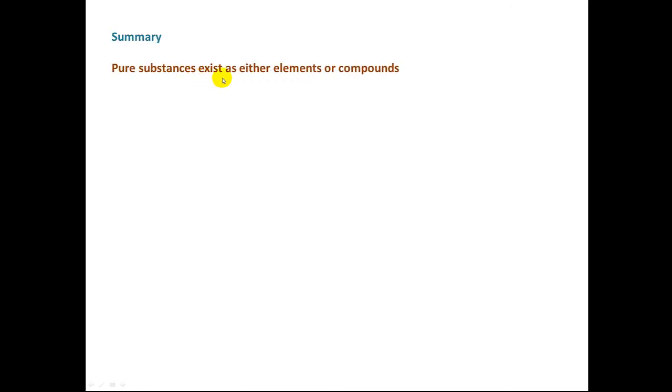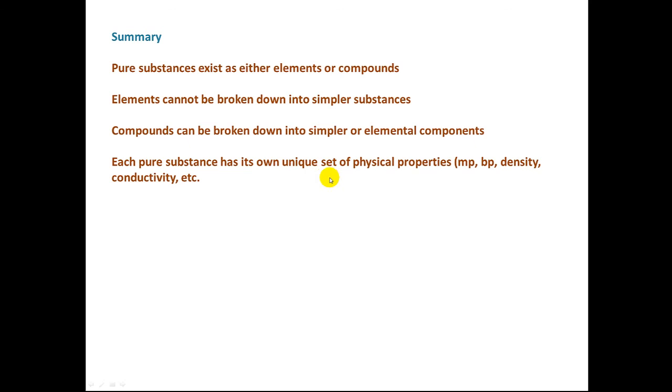Summary: pure substances exist as either elements or compounds. Elements cannot be broken down into simpler substances. Compounds can be broken down into simpler or elemental components. Each pure substance has its own unique set of physical properties: melting points, boiling point, density, conductivity, color.